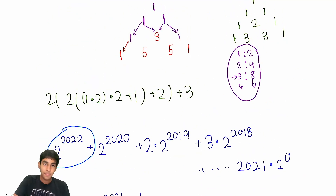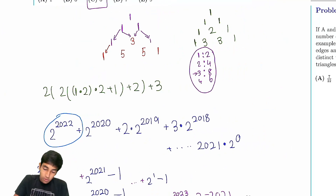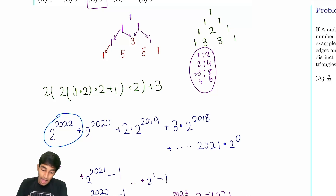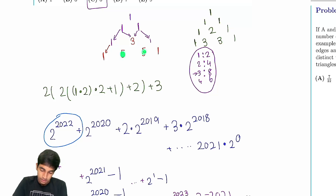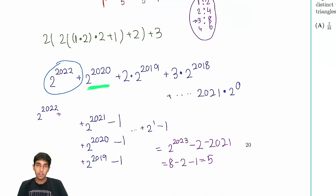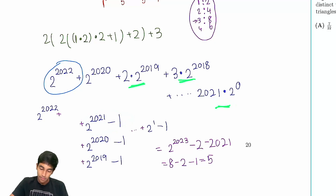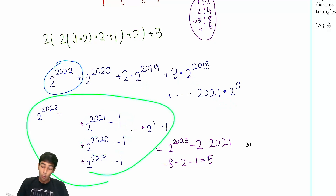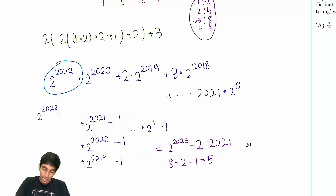The key trick was realizing that each value doubles into the next row. To find the total sum, we find the contribution from each value that was added — the first contributes 2 to the 2020, the next two contribute 2 to the 2019 each, and so on. Then, using the arithmetic-geometric series trick, we added one copy of each term at each step to reduce the expression to a simple geometric series, applied the formula again, and got our answer of 5.